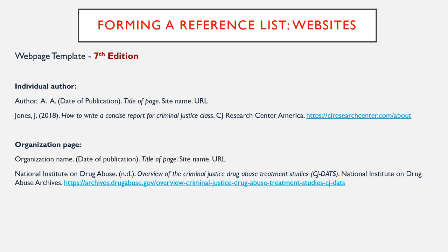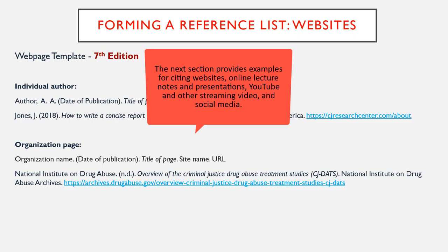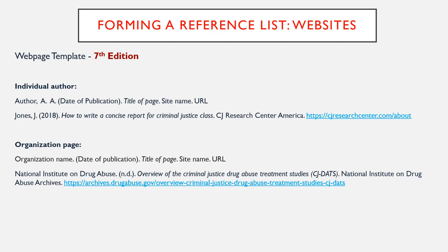There are many different types of websites and citing websites can be tricky. The general template for a website for an individual author includes the author's last name with initials, date of publication, title of the website italicized with the first letter of the title and subtitle capitalized, site name, and URL. For an organization webpage, include the organization name, date of publication, title of the page, site name, and URL. For a complete list of how to cite electronic sources, please refer to the 7th edition of the APA Publication Manual.